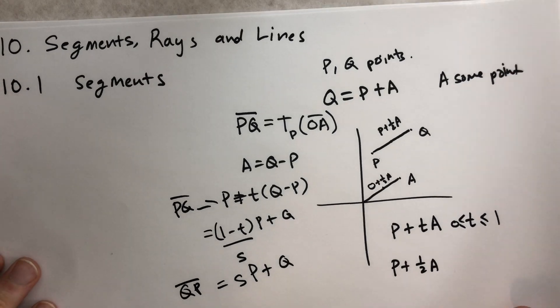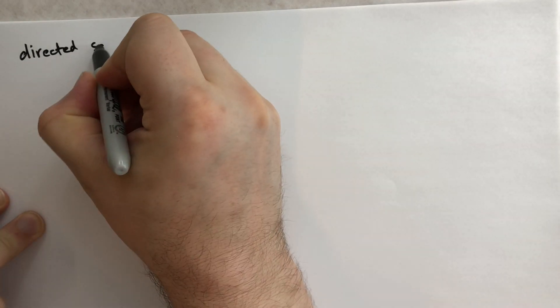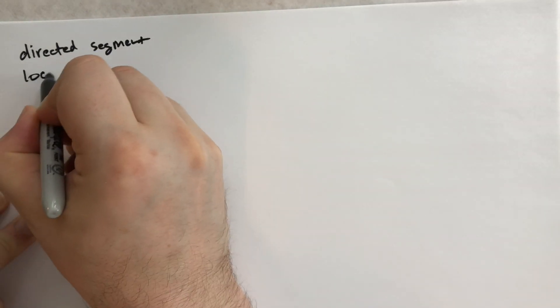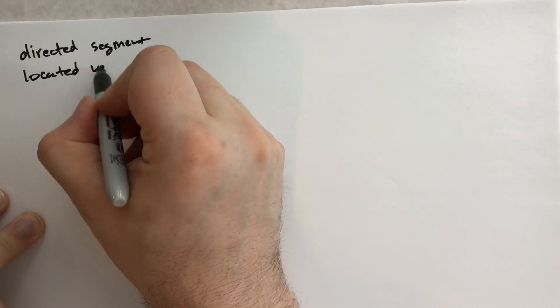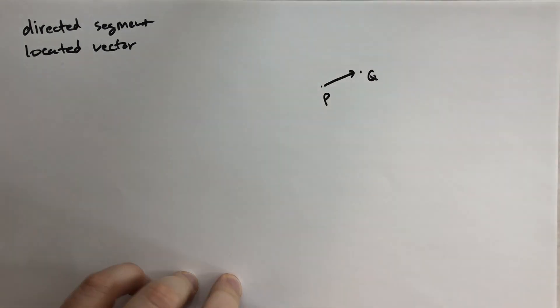Let's talk about the directed segment or the located vector. Typically vectors aren't bound to a point in space. When you do bind them to a point in space, they behave like points. In the directed line segment, the order does matter. We start at P, we have some point P and some point Q, and we progress from P to Q.